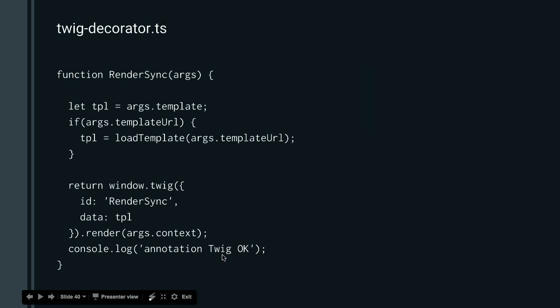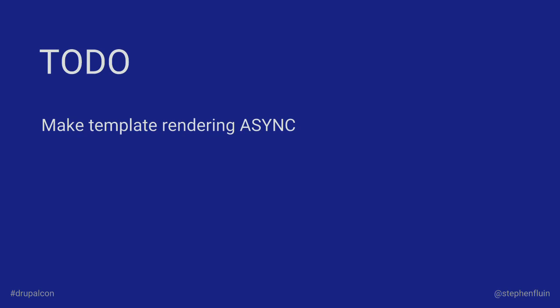I've got the Twig decorator.ts file here — this is a part of that library. What this is doing is loading the template, replacing all those arguments, and then doing a full rendering. One thing that's still open is making the template rendering async. One of the nice things about Angular is that almost everything is done via async processes and observables, but right now the Twig template rendering is synchronous, which means it's going to block the rendering of whatever else you're doing.